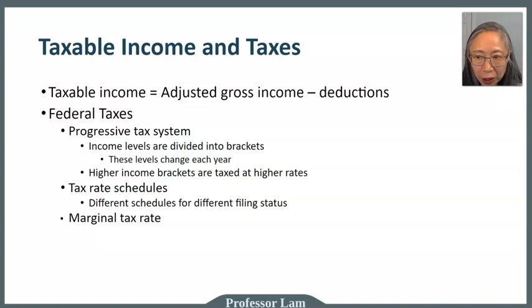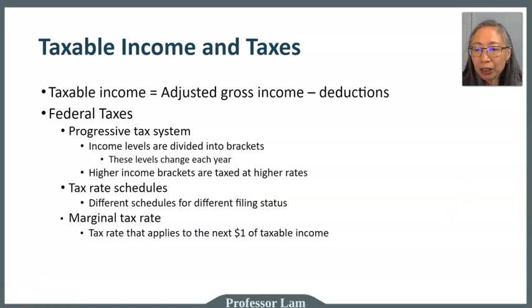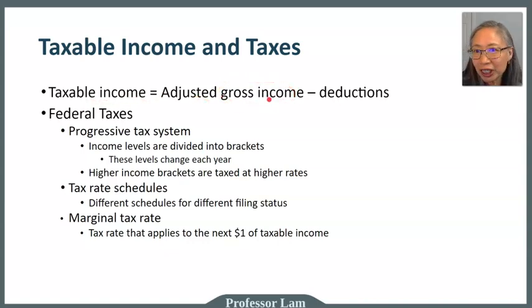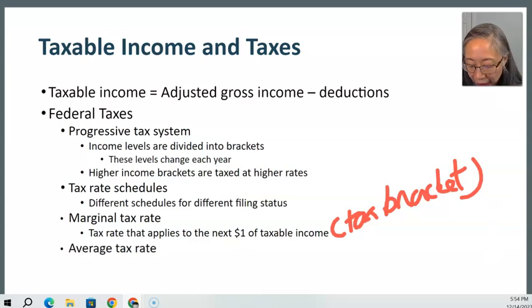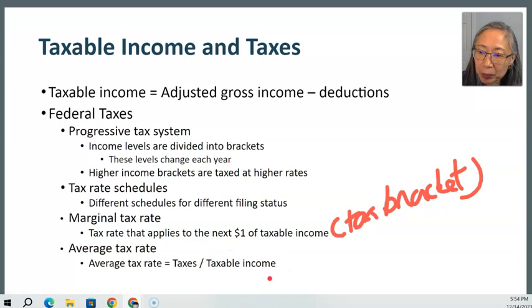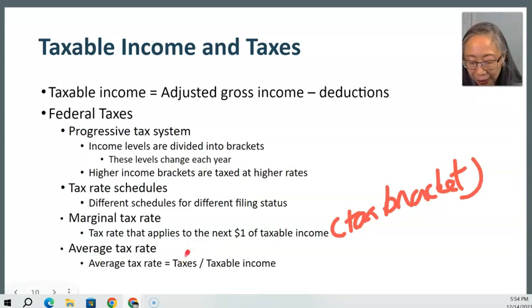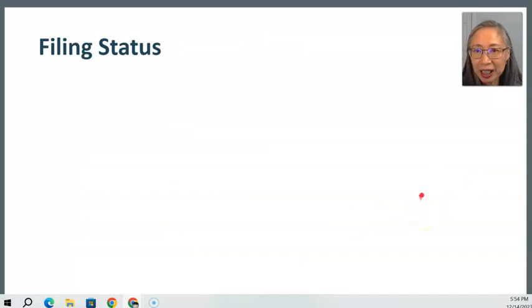Because we have different tax brackets, it's important to understand the difference between the marginal tax rate and the average tax rate. The marginal tax rate refers to the rate that applies to the next dollar of taxable income — in other words, which tax bracket you're in. The average tax rate is computed as the actual tax amount divided by taxable income. Most people's average tax rate is lower than their marginal tax rate, except for very high earners.